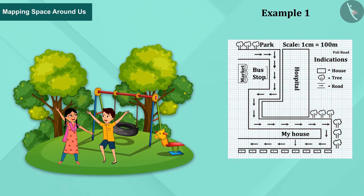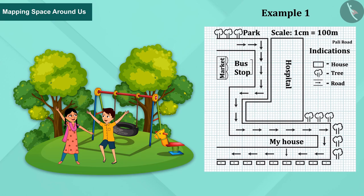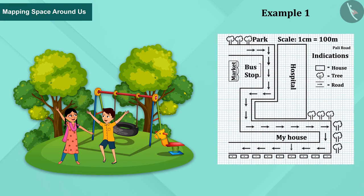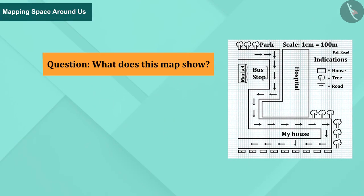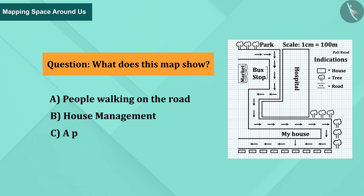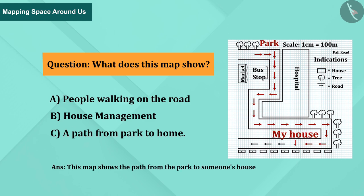Example 1: While playing, Ria and Arun found a map — you can see that map on the screen. Many questions arose in their minds. Let us find the answers. Question: What does this map show? A) people walking on the road, B) house management, or C) a path from park to home. This map shows the path from the park to someone's house.